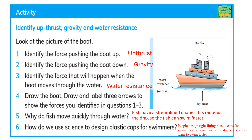Draw the boat. Draw and label three arrows to show the forces you identified in questions 1 to 3. Why do fish move quickly through water? Fish have a streamlined shape. This reduces the drag so the fish can swim faster. How do we use science to design plastic caps for swimmers? People design tight fitting plastic caps for swimmers to reduce water resistance and allow them to swim faster.